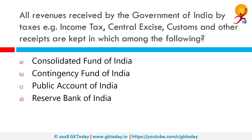All revenues received by the government of India by taxes like income tax, central excise, customs and other receipts are kept in which among the following? The correct answer is Consolidated Fund of India. Consolidated Fund of India is the most important of all government accounts. Revenues received by the government and expenses made by it, excluding exceptional items, are part of it. This fund was constituted under Article 266 of the Constitution of India.